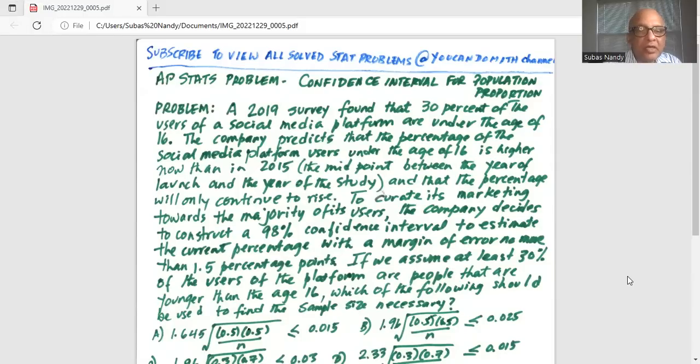To curate its marketing towards the majority of its users, the company decides to construct a 98% confidence interval to estimate the current percentage with a margin of error of no more than 1.5 percentage points. If we assume at least 30% of the users of the platform are people that are younger than the age of 16, which of the following should be used to find the sample size necessary?